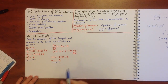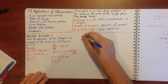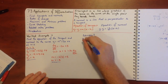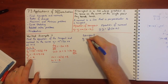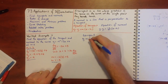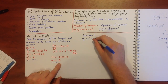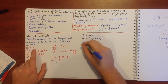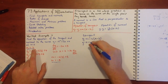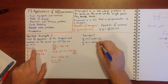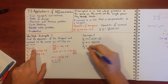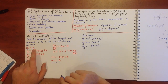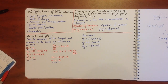Now we can use our equations. For the tangent: y minus y1 (which is 4) equals m (which is negative 3) times (x minus x1, which is 3). Expanding the brackets gives negative 3x plus 9, so y equals negative 3x plus 13. You should always put the answer in the form y equals mx plus c.